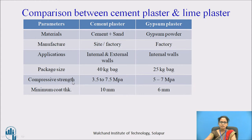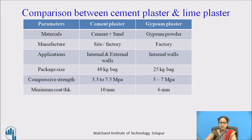The compressive strength is an important factor in selecting the type of plaster. For cement plaster, it is 3.5 to 7.5 MPa, whereas for gypsum it is 5 to 7 MPa. The minimum coat thickness for cement plaster is 10 mm, whereas for gypsum it is 6 mm — if less than 6 mm, it may peel off from the wall. The curing for cement plaster requires 7 days of wet curing in water, whereas gypsum requires air curing of 24 hours.